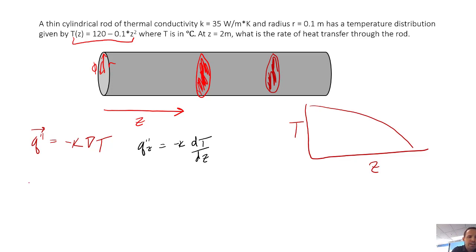So let's see how that looks. q''z equals minus k times dT/dz. If we differentiate this equation, we would get that is minus 0.2z. So what does that look like?